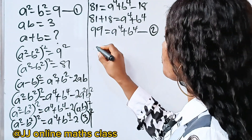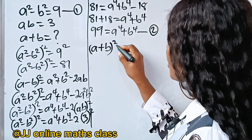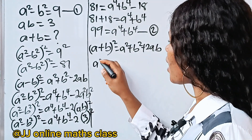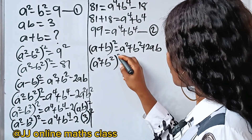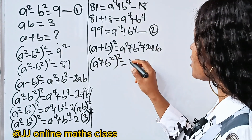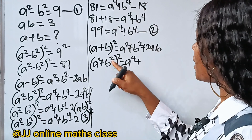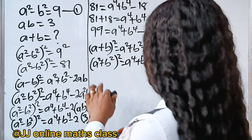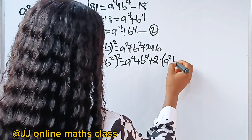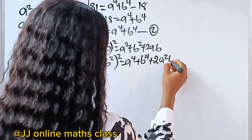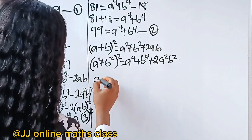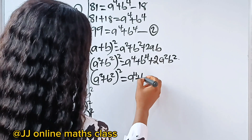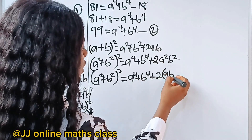Now recall the algebraic identity that (a plus b) squared is equal to a squared plus b squared plus 2ab. Now, if we have (a squared plus b squared) squared, it's going to be a squared squared — which is a to the power of 4 — plus b squared squared — which is b to the power of 4 — plus 2 multiplied by a squared times b squared.